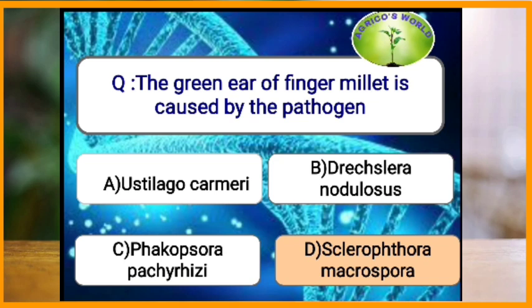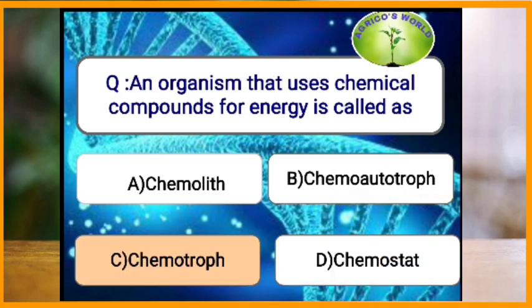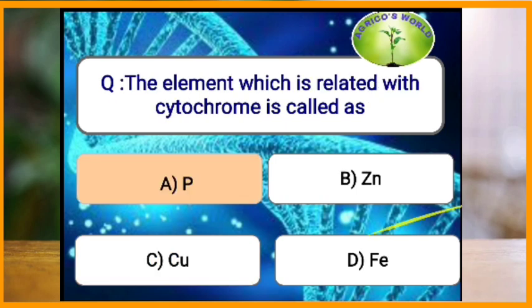The green ear of finger millet is caused by which pathogen? The green ear of finger millet is caused by Sclerophthora macrospora. An organism that uses chemical compounds for energy is called what? Any organism that uses chemical compounds for obtaining energy is known as a chemotroph.